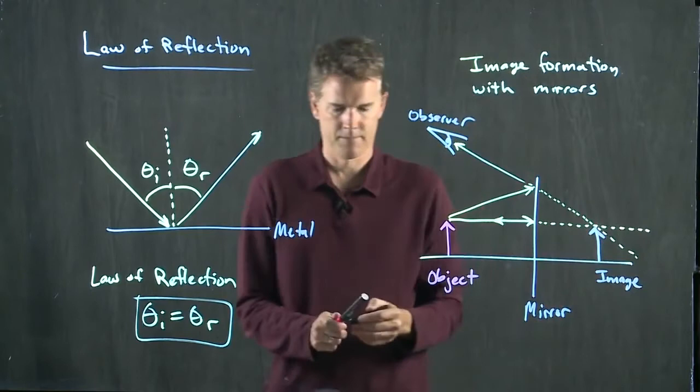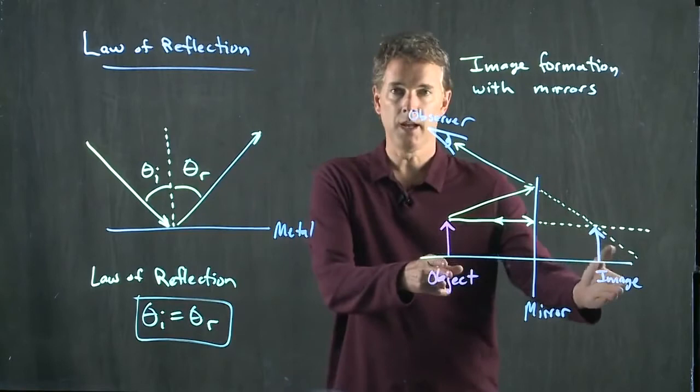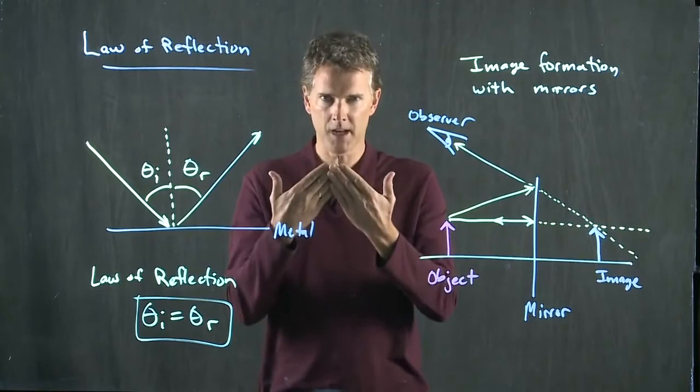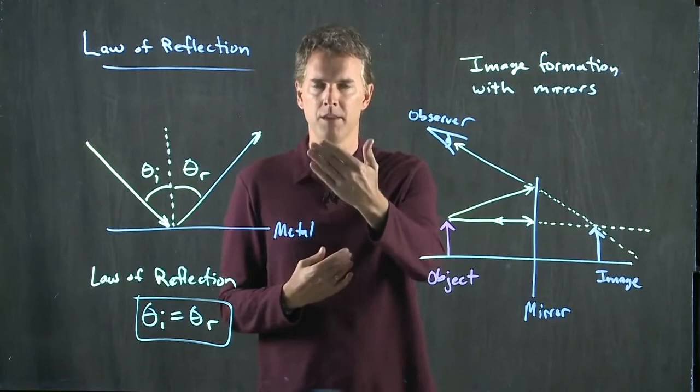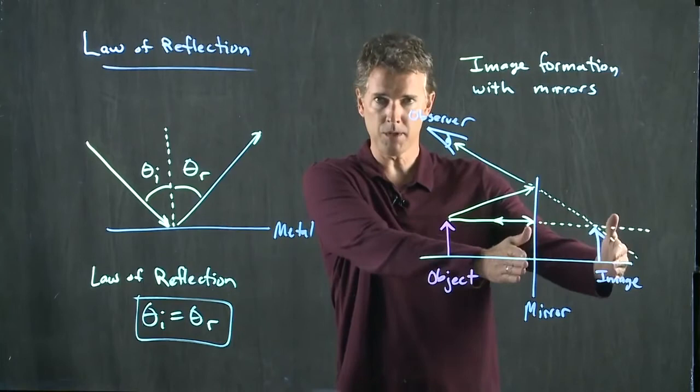So everybody got it right. The image is equidistant from the mirror on the other side. You know this already, right? When you stand in front of a mirror, you see an image of yourself on the other side of the mirror the exact same distance away. If you're standing two feet away from the mirror, it looks like you have an image that's two feet on the other side of the mirror.